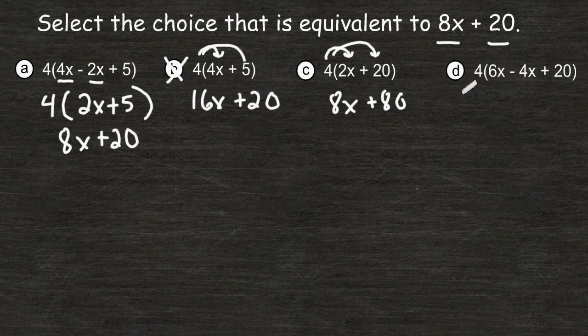For choice D, inside the parentheses we have some terms that can be combined. We're going to rewrite that as 4 times, and 6x minus 4x is 2x. We're going to bring down that 20, which we cannot combine with 2x.